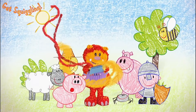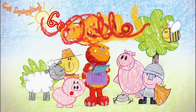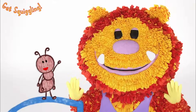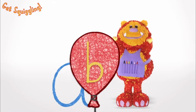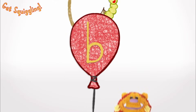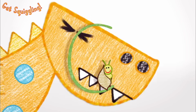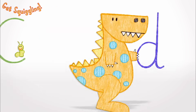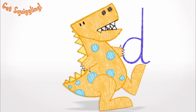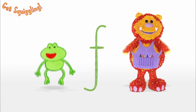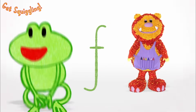It's fun when you get squiggling! A is for Ant, B is for Balloon, C is for Caterpillar curled in a Cocoon, D is for Dinosaur, E is for Egg, F is for Frog with Boingy Boingy Legs.